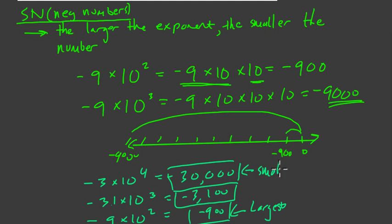So we go from smallest to largest in negatives with this idea that the larger the exponent, the smaller the number. And of course with positives, the reverse is true. The larger the exponent, the larger the number.